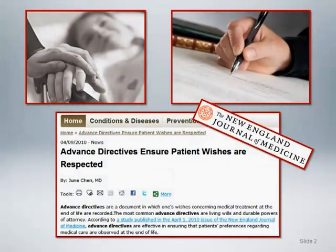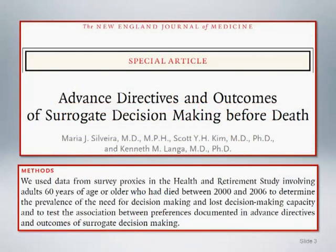Our case illustration comes from a special article published in the New England Journal of Medicine in April of 2010 about advanced directives and outcomes of surrogate decision making before death. This article is based on data from survey proxies in the Health and Retirement Study involving adults 60 years of age or older who had died between 2000 and 2006. The goal was to determine the prevalence of the need for decision making and lost decision making capacity, and to test the association between preferences documented in advanced directives and outcomes of surrogate decision making.